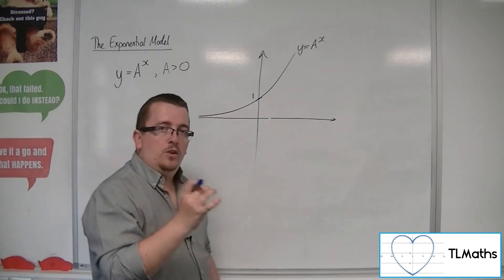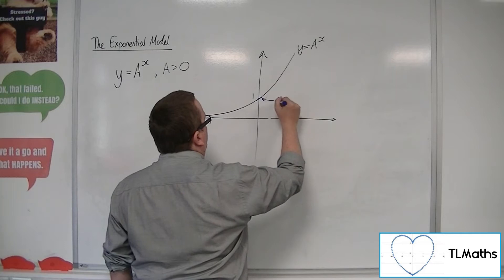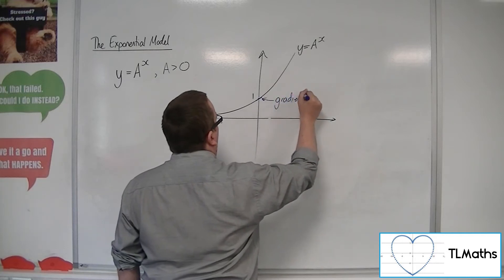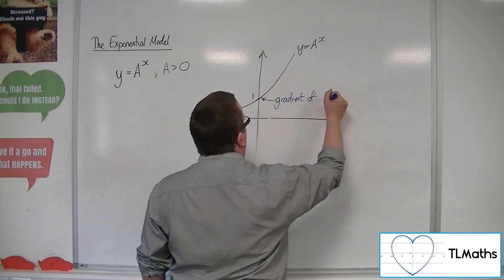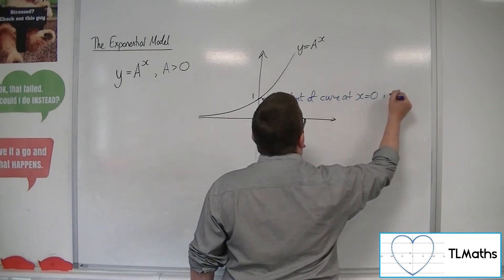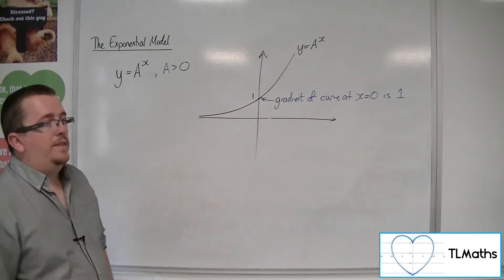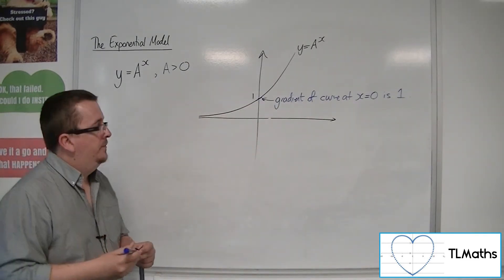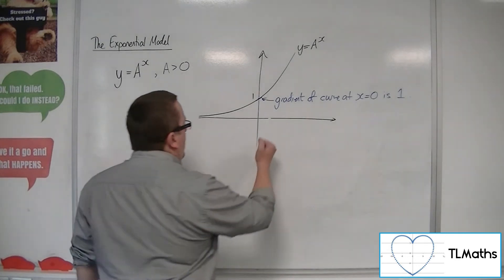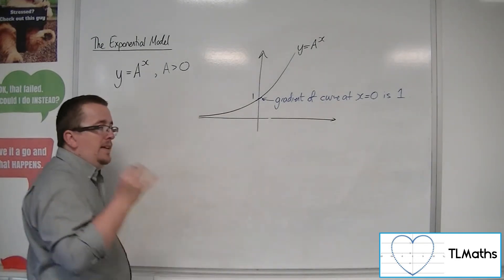So the gradient when x is 0 is equal to 1. It's effectively the gradient of the tangent to the curve at that point. And the specific value of a that gives you this.